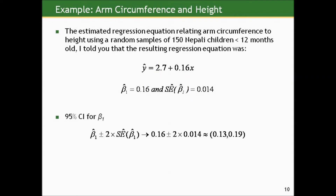From the equation relating arm circumference to height, the estimated slope was 0.16 and the estimated standard error was 0.014. To create a confidence interval, we do the same thing as before, exploiting the properties of the normal curve. Most 95% of the samples we take will get a slope within two standard errors of the true slope. Taking our estimated slope and adding and subtracting two standard error estimates, we get a 95% confidence interval of about 0.13 to 0.19 centimeters of arm circumference per centimeter of height.